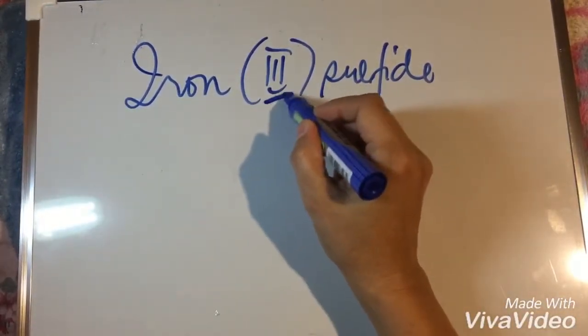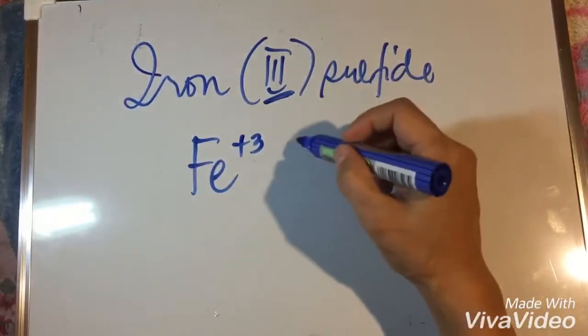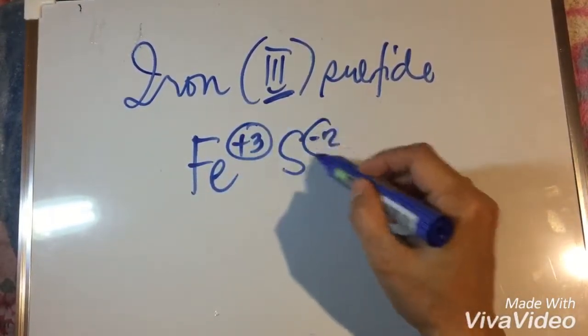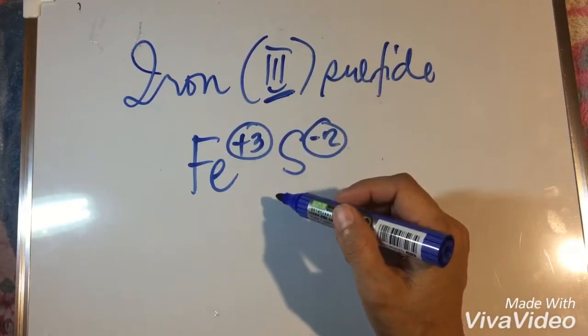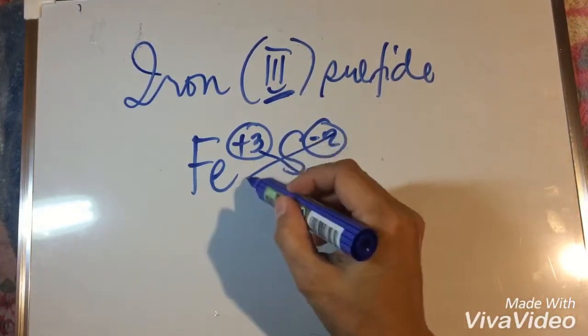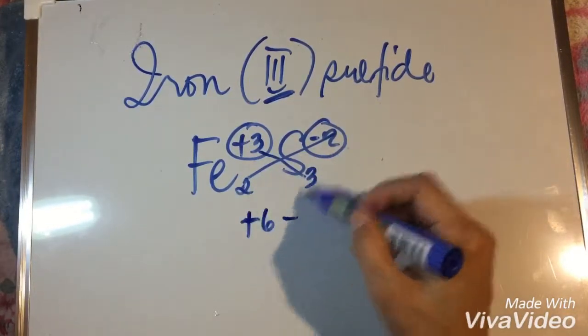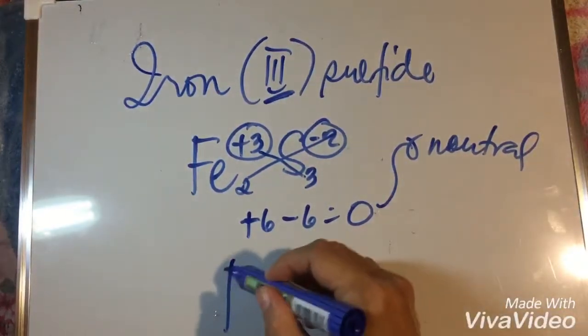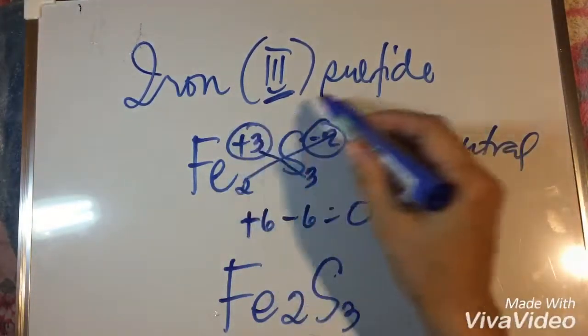My last example is iron(III) sulfide. Again, it has Roman numeral three, that means iron used positive three as the charge and sulfur negative two. And what you can see is that we do not have equal charges. So what we're going to do is use the crisscross process or the crossover process by writing subscript of three for sulfur and two for iron. That makes the charges now equal, having positive six and negative six, which is now equal to zero or neutral. And therefore, the final formula will be Fe₂S₃ for iron(III) sulfide.